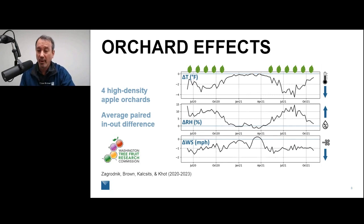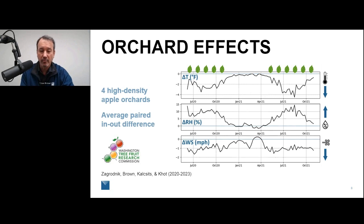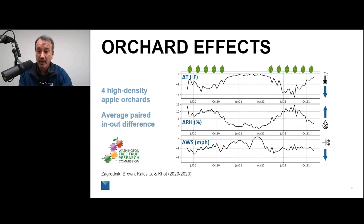This difference will have a big effect on your pest models, disease models, and bloom models. Relative humidity also reflects this — it's wetter inside the canopy than outside. And wind speed is systematically lower inside the canopy when leaves are out, with the one exception being late March when wind machines protecting against frost actually make it slightly windier inside.